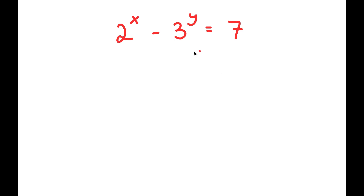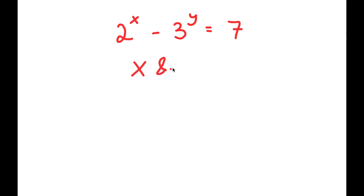In this problem, I have 2 to the power of x minus 3 to the power of y is equal to 7. I want to find the values of x and y.